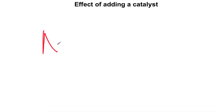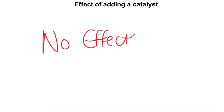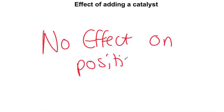The final thing we can do is to add a catalyst. A catalyst has no effect on the position of equilibrium. It gets you to your equilibrium quicker, but it catalyzes both the forward and reverse reactions, so it has no effect on which position your equilibrium sits at.